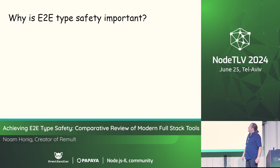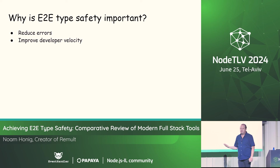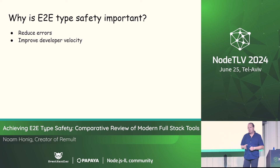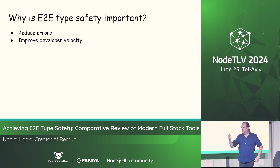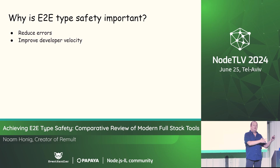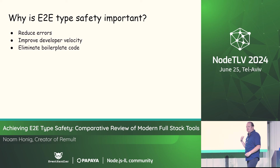So why is end-to-end type safety important? First of all, to reduce errors — as I said, I'm error-prone and I'd like to reduce the chance of mistakes. It allows us to improve developer velocity, develop faster, not get spelling mistakes or typing errors like sending a string to a boolean. It also helps with readability and understandability of the code where we can actually see the parameters and what's going on.